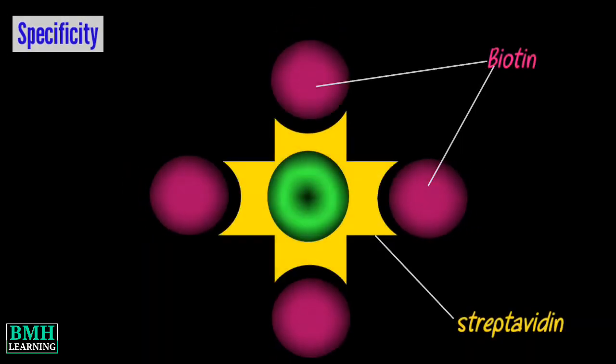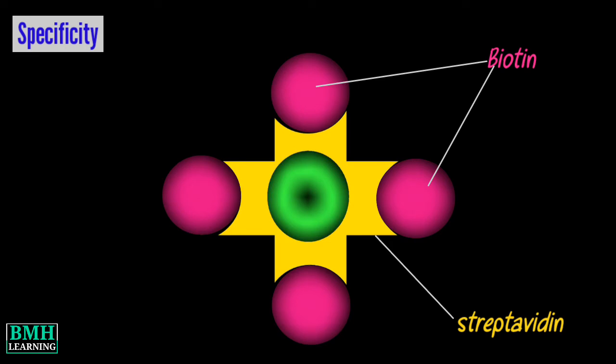The second is the specificity with which biotin and streptavidin bind to each other. This enlarged part is due to the tetrameric conformation of streptavidin. One streptavidin protein has the capacity to bind four biotin molecules with high affinity and selectivity.